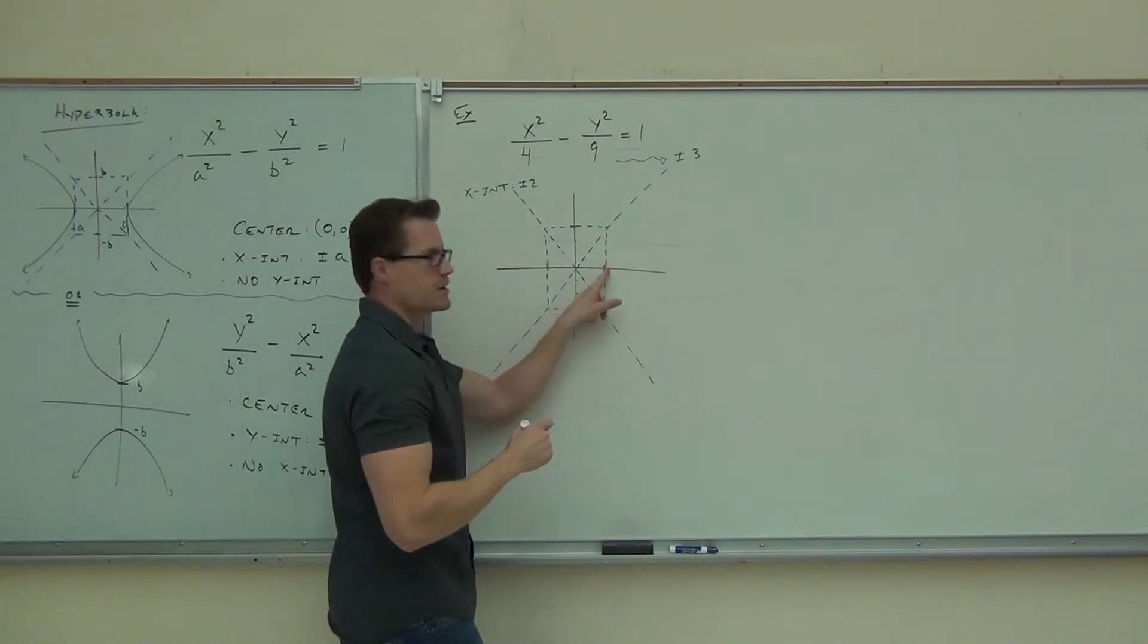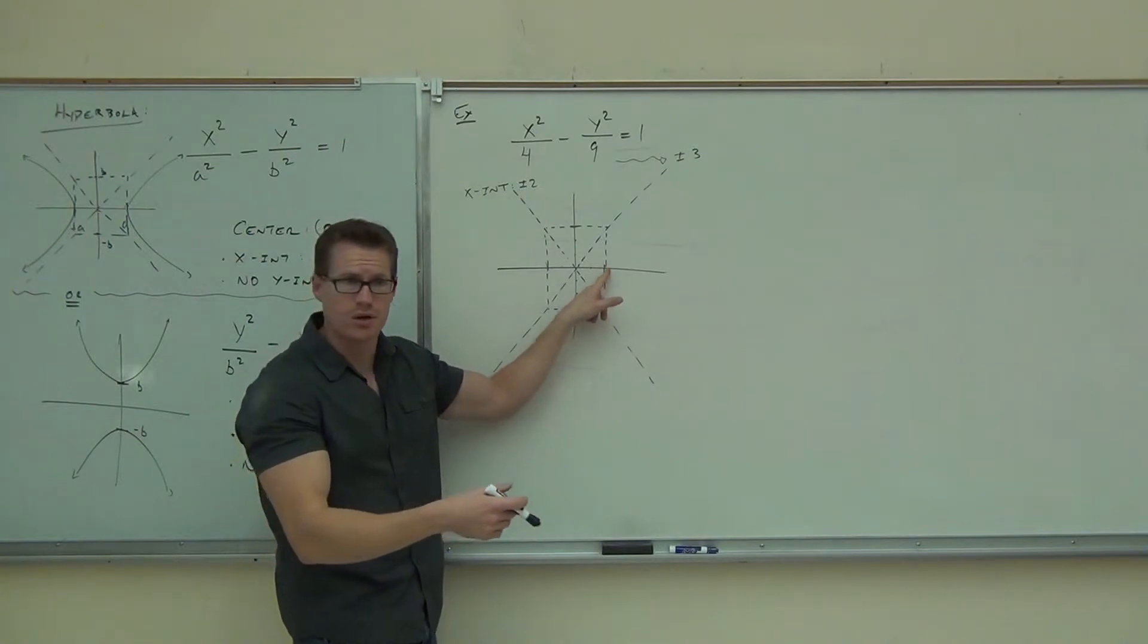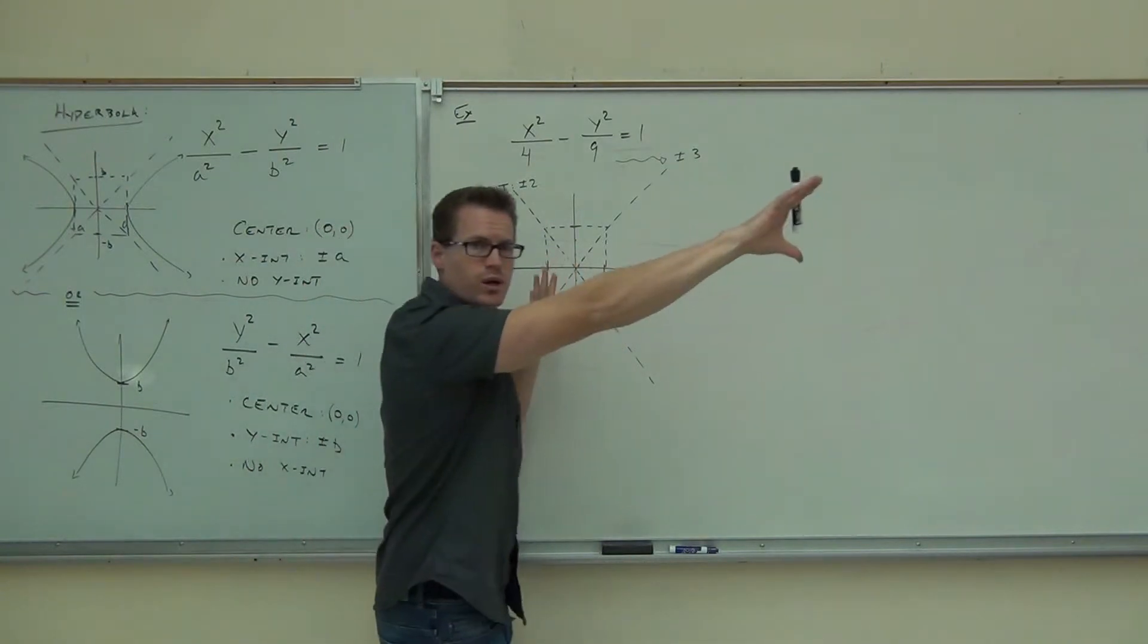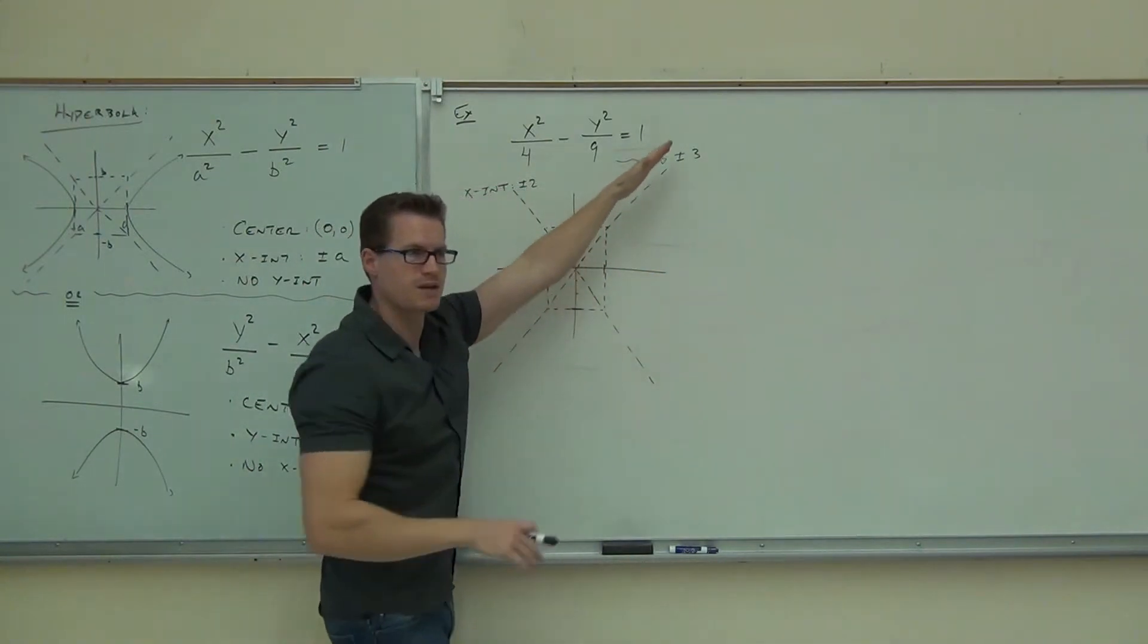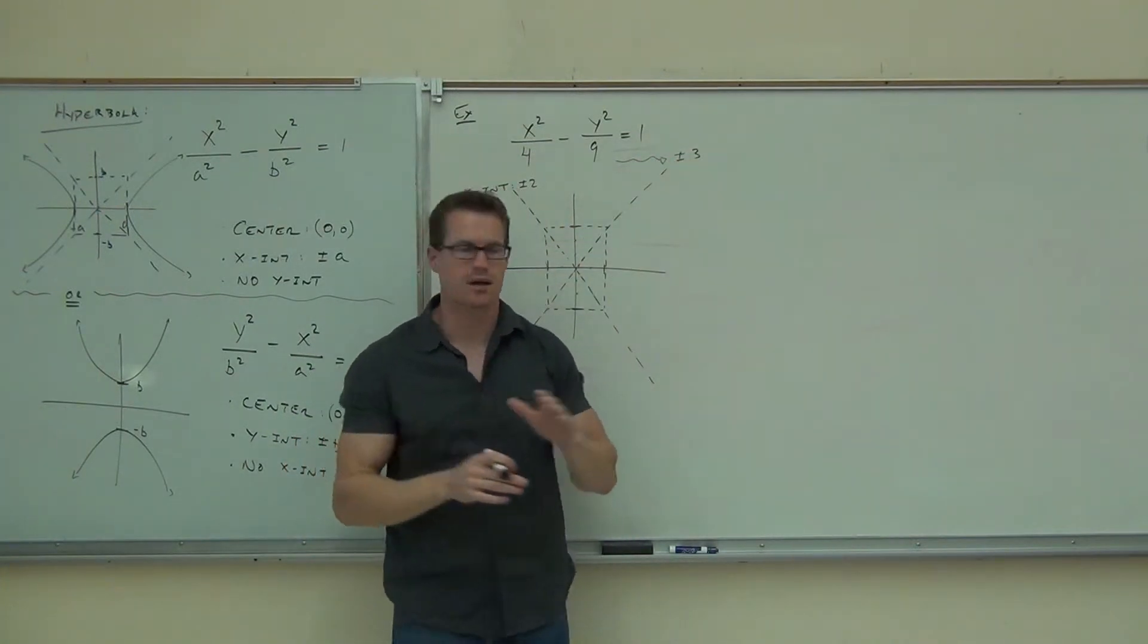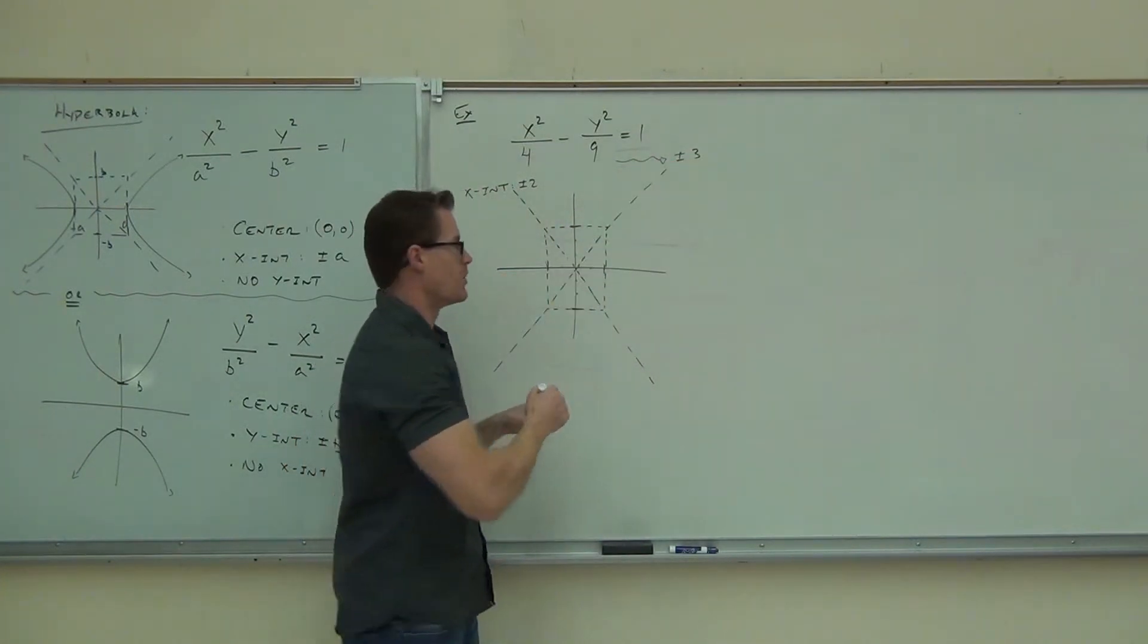Now, you already know it's going to be here. You already drew that graph, right? I just erased it. You already know it's going to be here, it's going to be here, and it's going to go this way. You follow? These lines give you what are called asymptotes. Hyperbolas are asymptotic to those lines that you drew through your box.